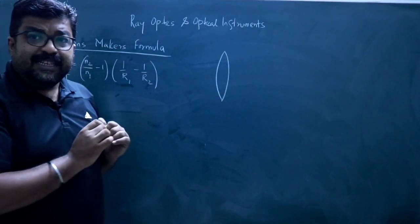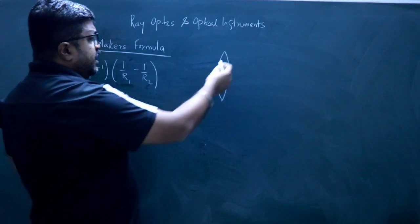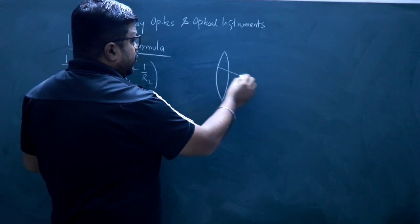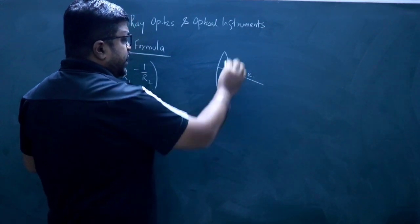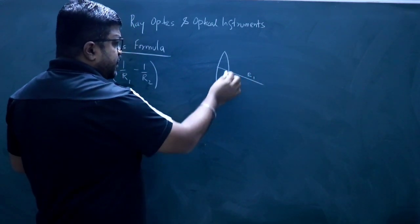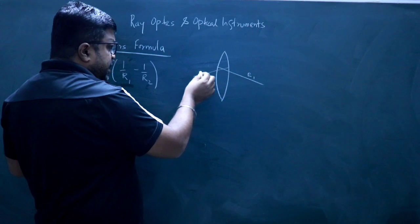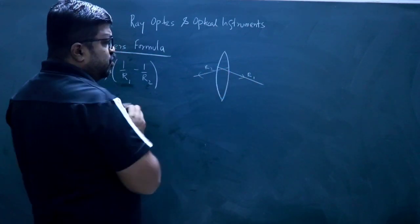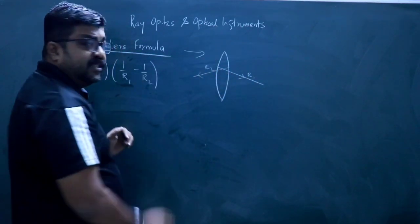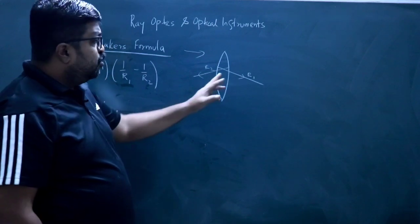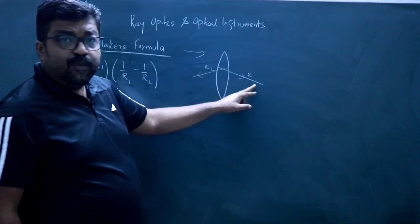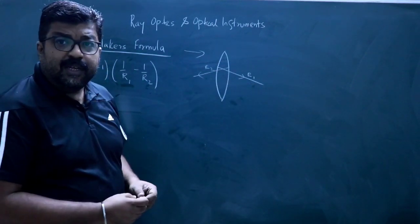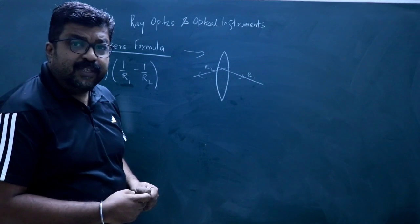The first thing in a bi-convex lens: this is the first surface — we measure radius R1. This is the second surface — we measure radius R2. So obviously, if this is the direction of the incident ray, then R1 will be positive and R2 will be negative, using sign convention.